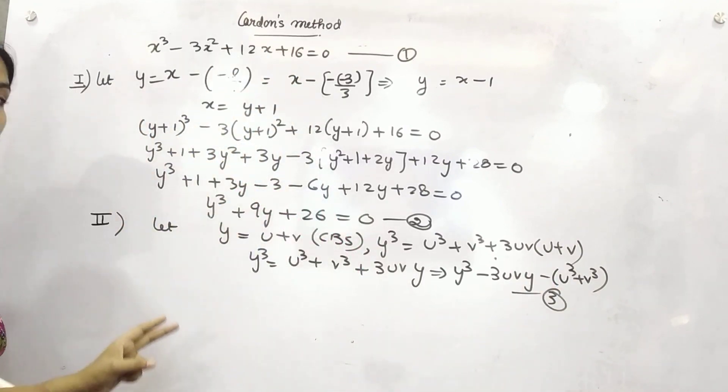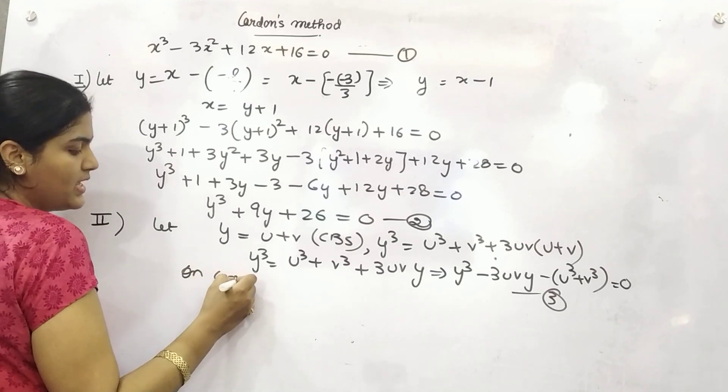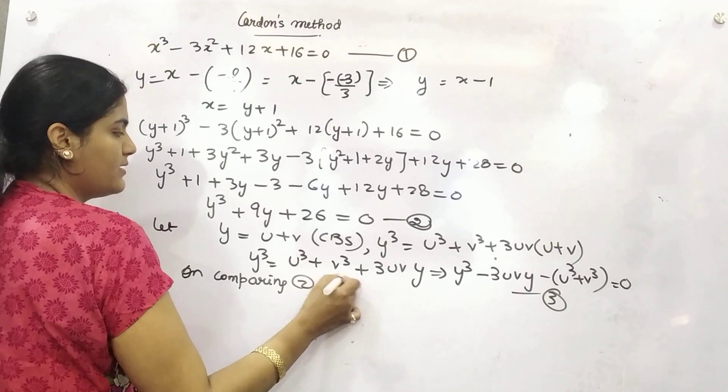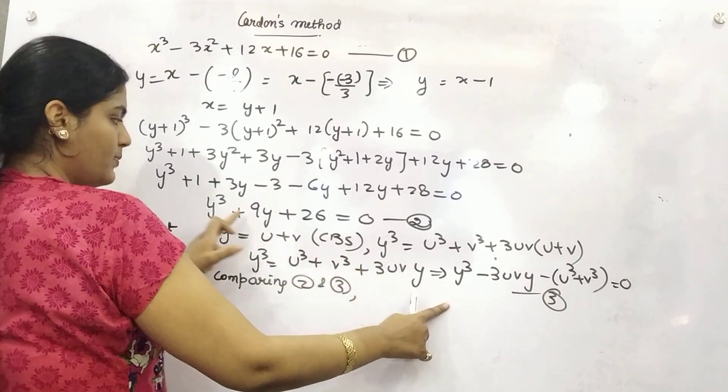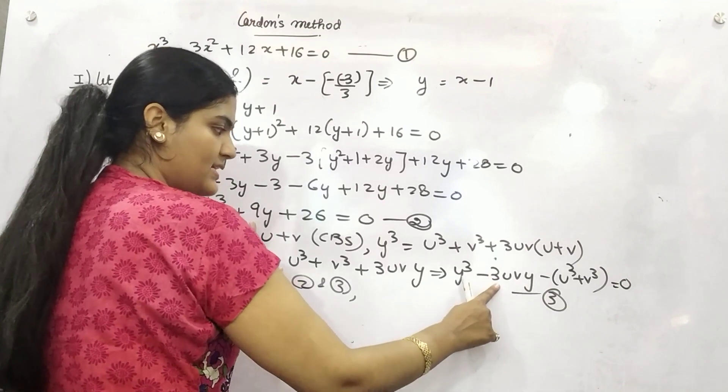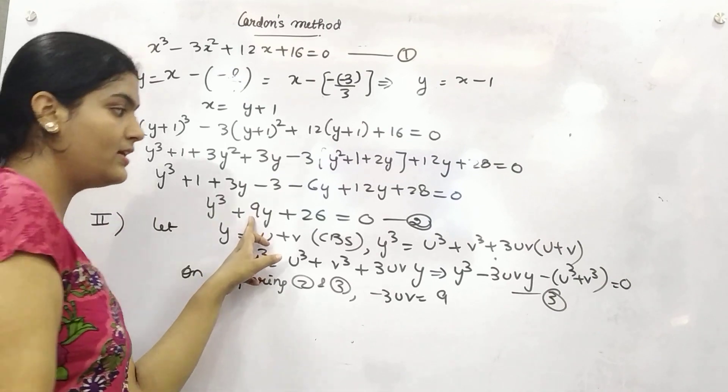So y cube minus 3uvy minus u cube plus v cube. This is your third equation. Now compare. This is equals to 0. Compare second and third. On comparing second and third. What will you get? This is y cube. This is 9. The coefficient of y is 9 here. Coefficient of y is minus 3uv. So 3uv will be 9.